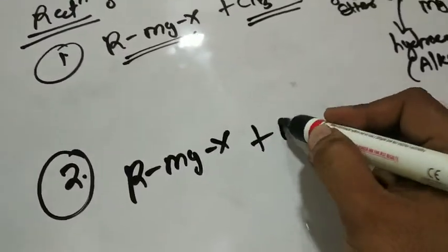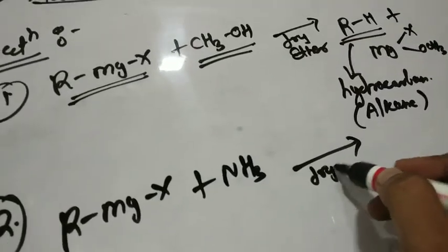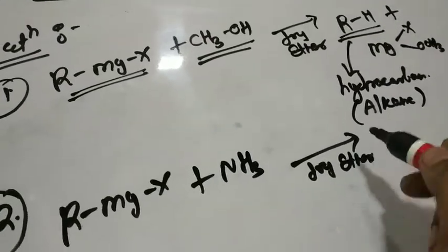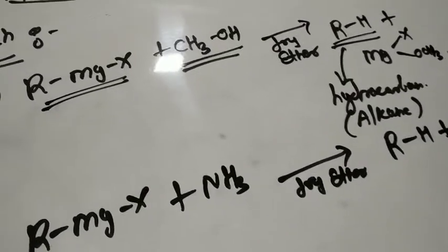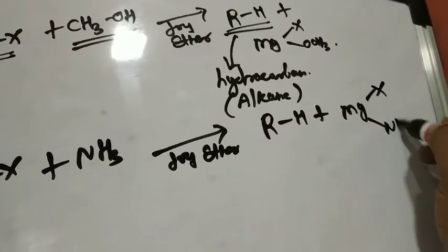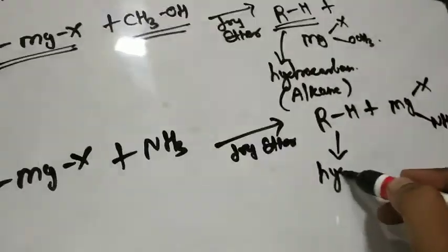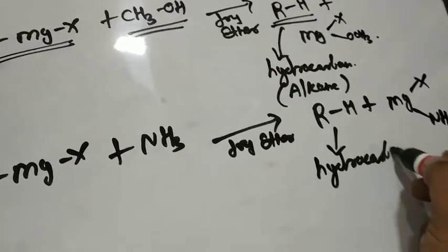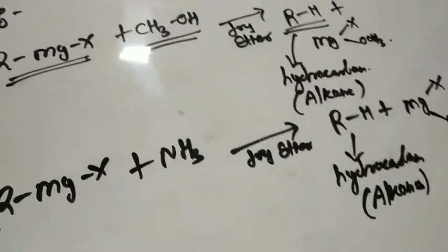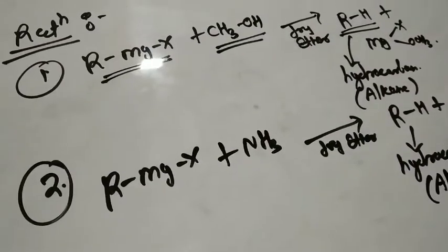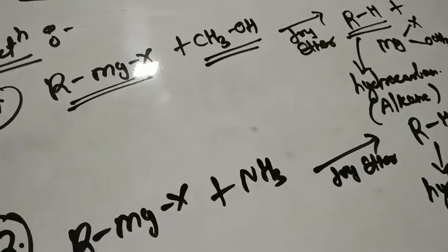Similarly, RMgX plus NH₃ in presence of dry ether again gives RH plus MgX·NH₂. Again, a hydrocarbon is obtained — alkanes are obtained. So we can use this Grignard reagent for preparing hydrocarbons.